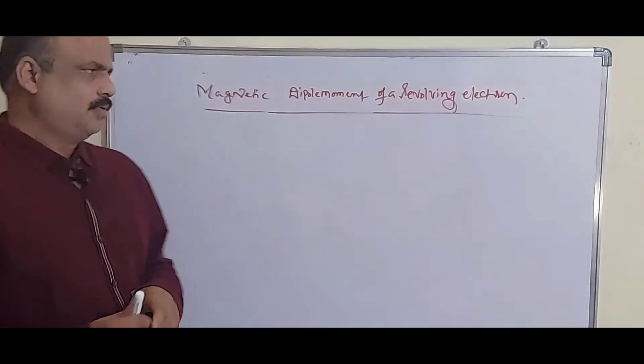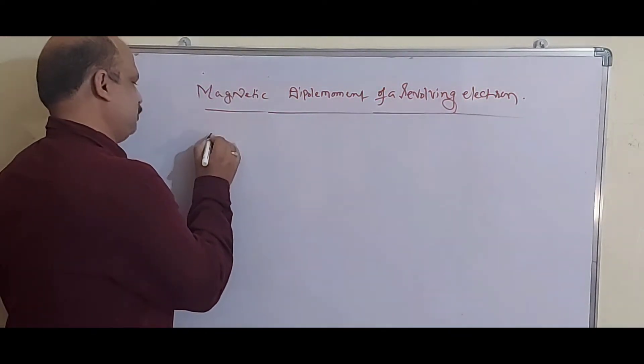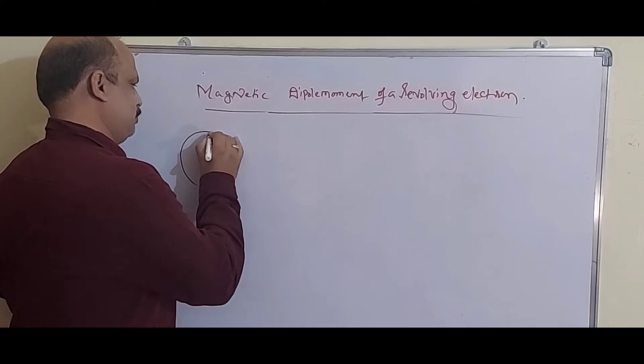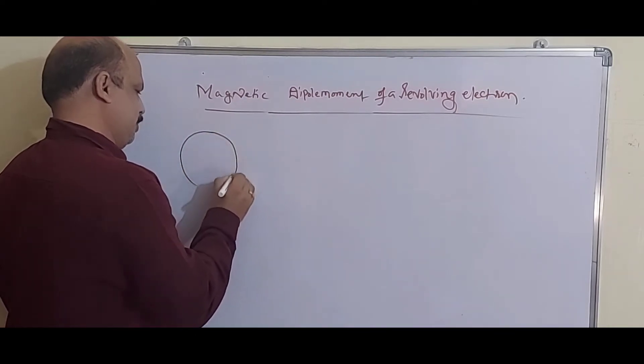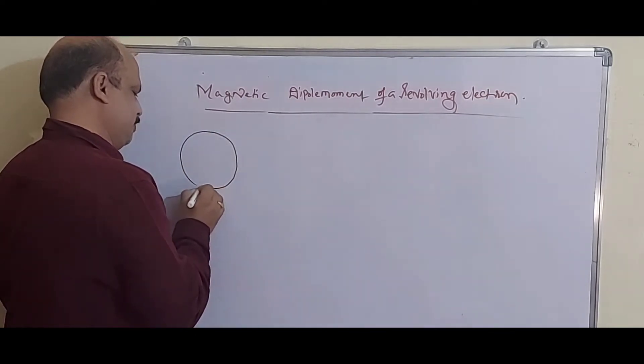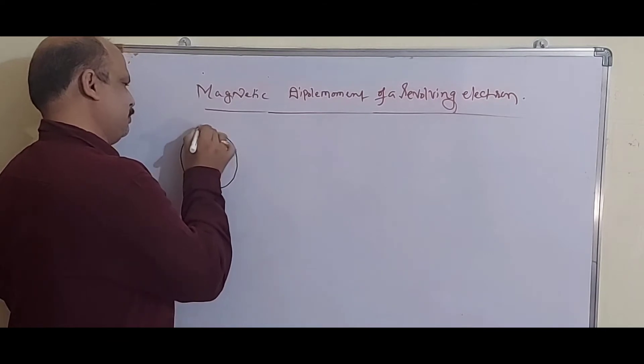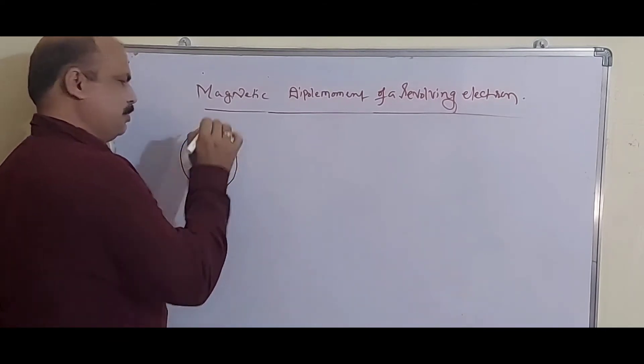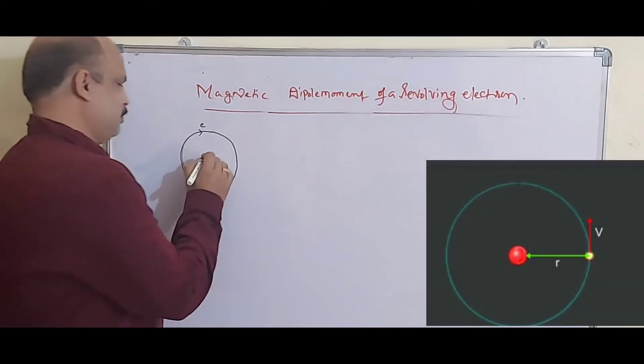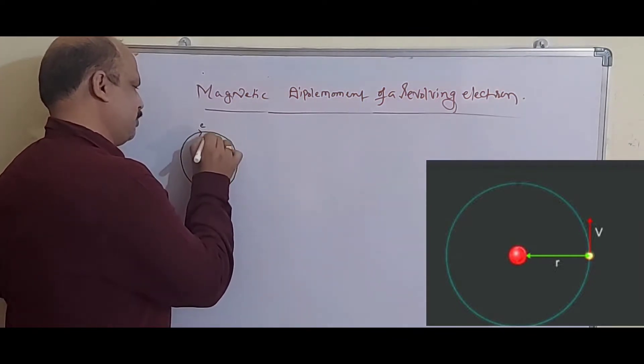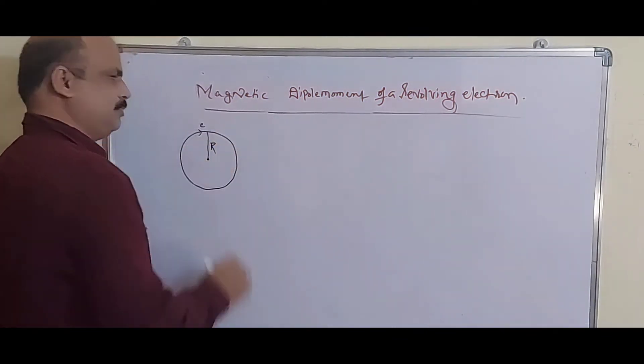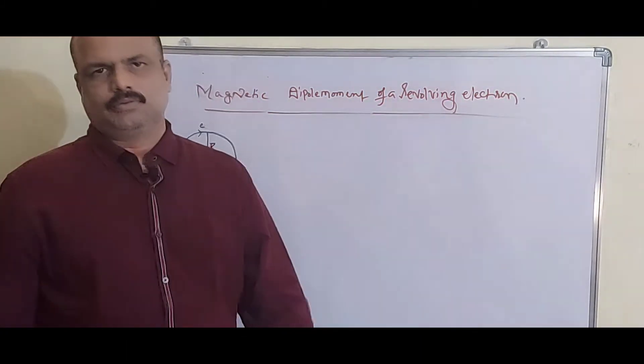Here there is an electron. The electron is revolving in an orbit. The radius of this orbit is r.